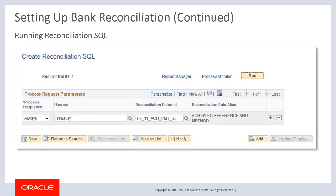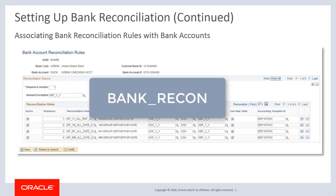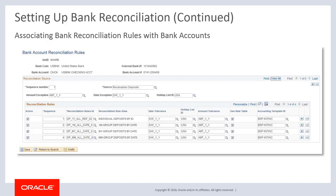As the third step to setting up bank reconciliation, use the Create Reconciliation SQL page to run Reconciliation Rules SQL Processing for an individual source and the specified rule within the source. Reconciliation Rules SQL Processing evaluates the source and reconciliation rules to build and store the filter SQL. As the final step, associate reconciliation rules by source to a bank account using the Bank Account Reconciliation Rules page. The automatic bank reconciliation process, Bank Recon, uses these rules to reconcile bank statement lines with transaction lines.